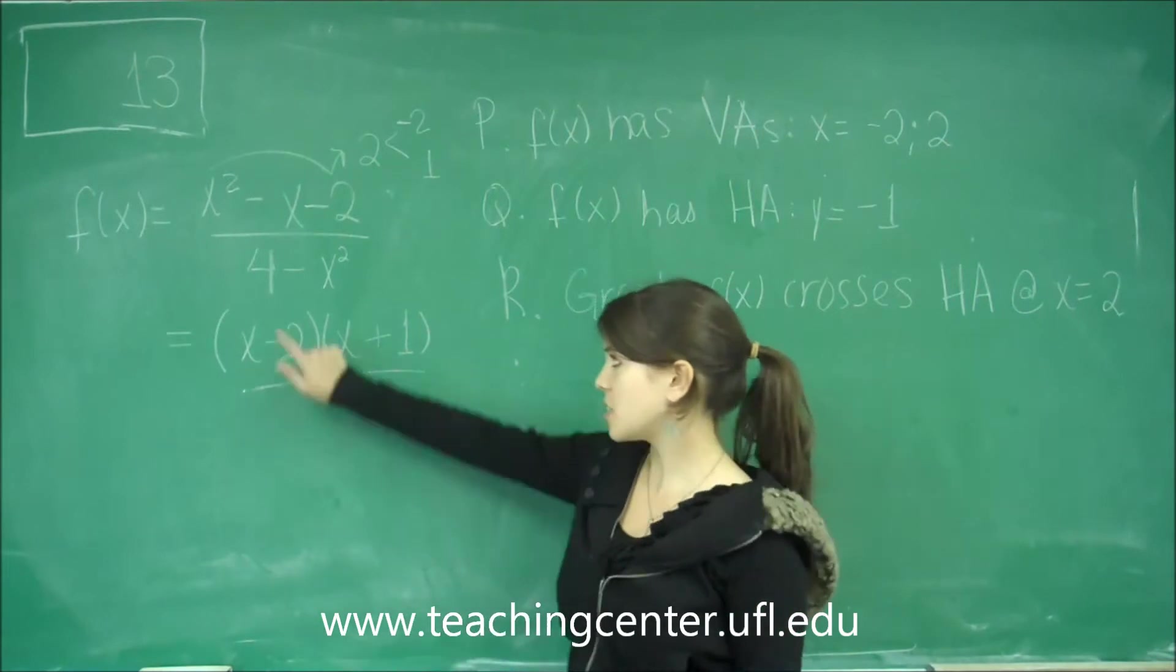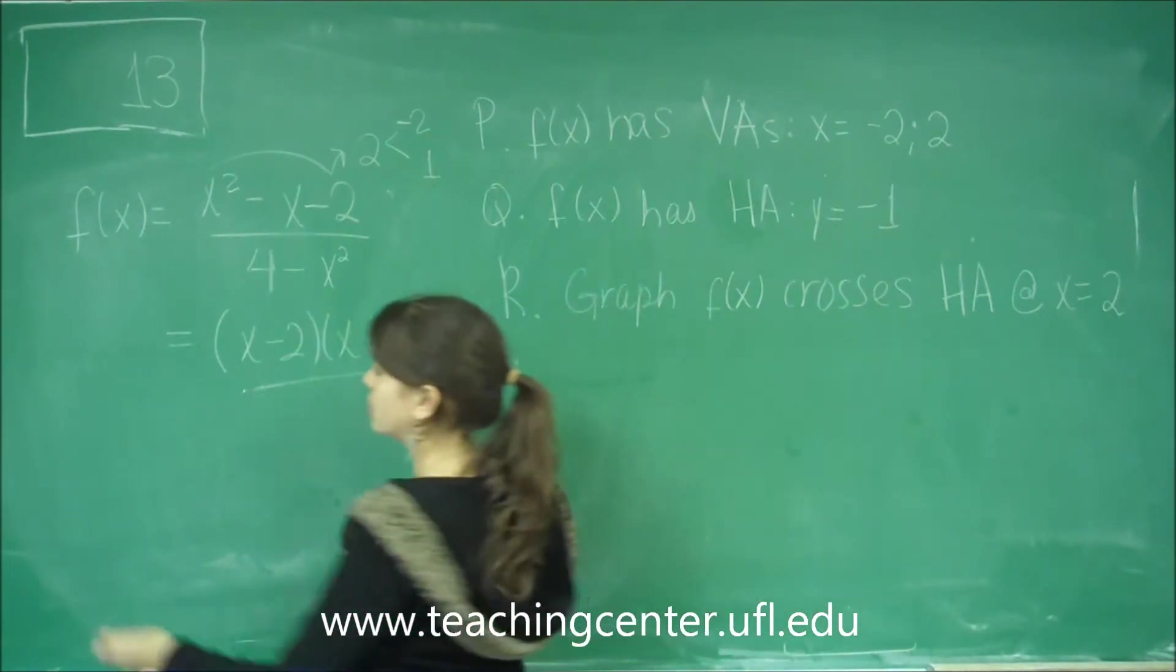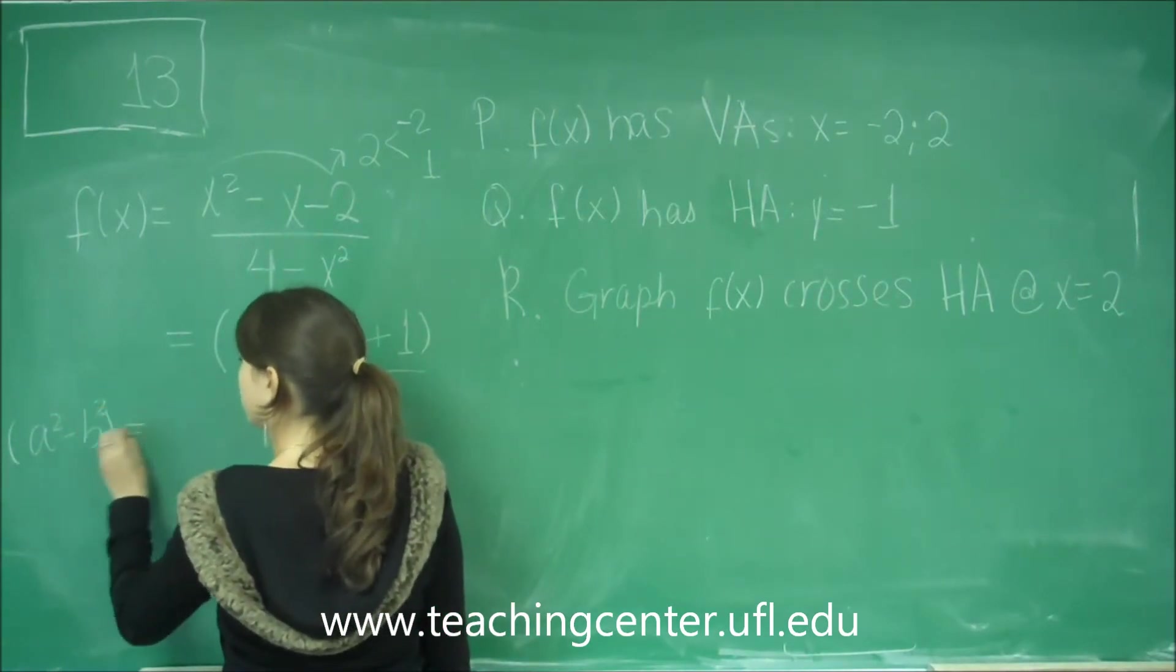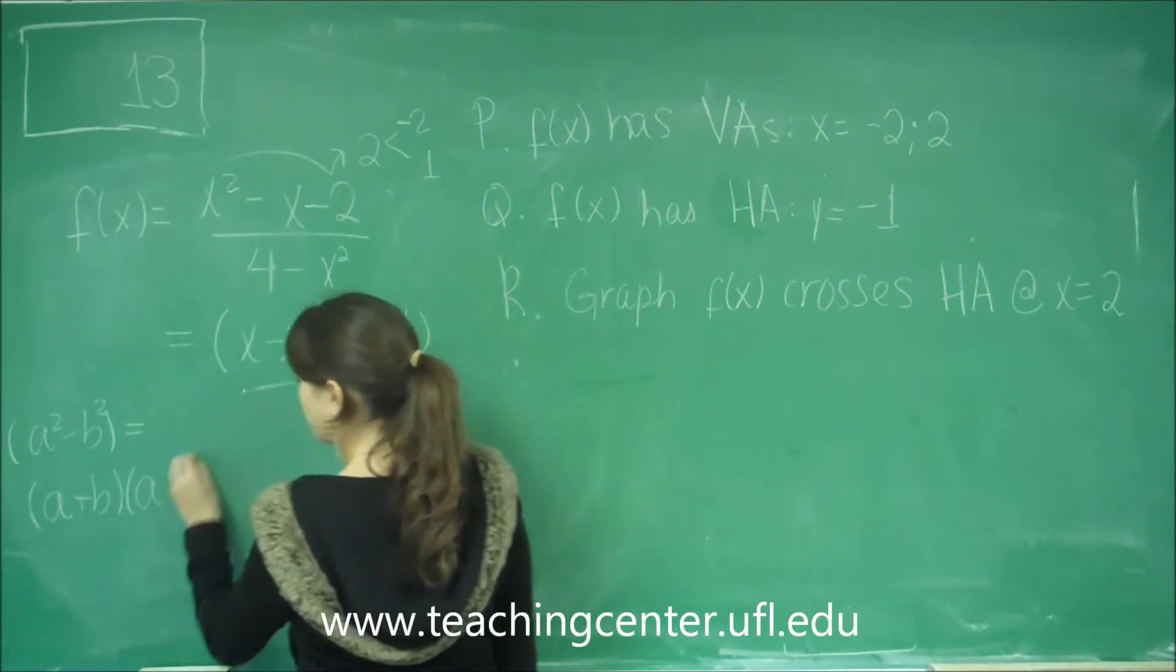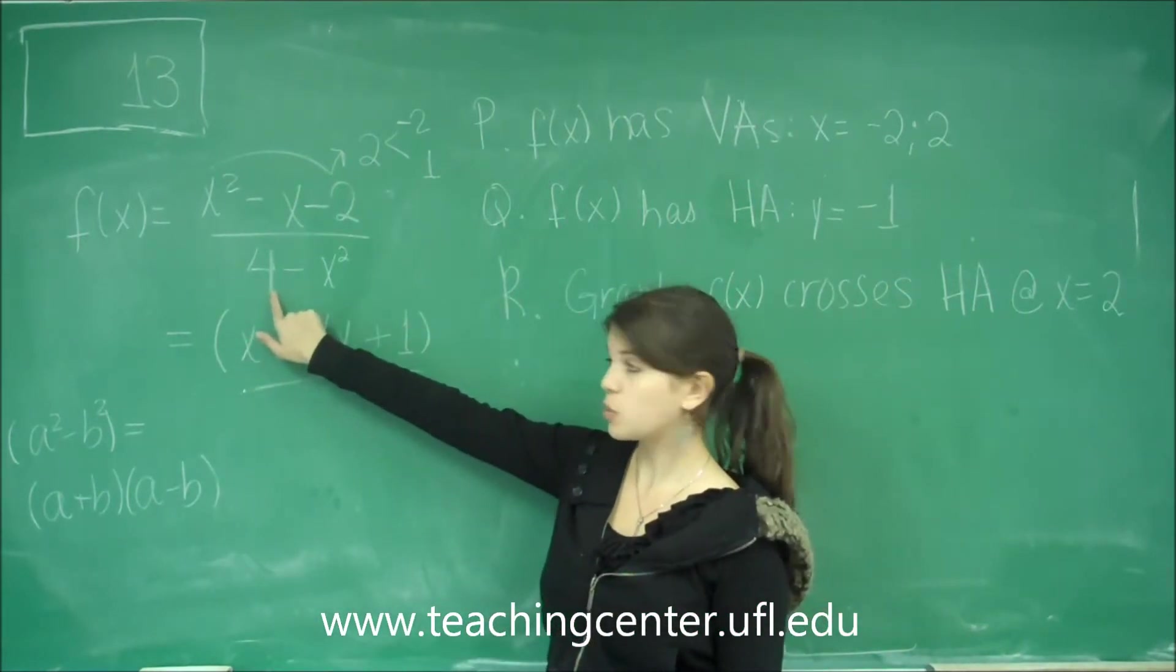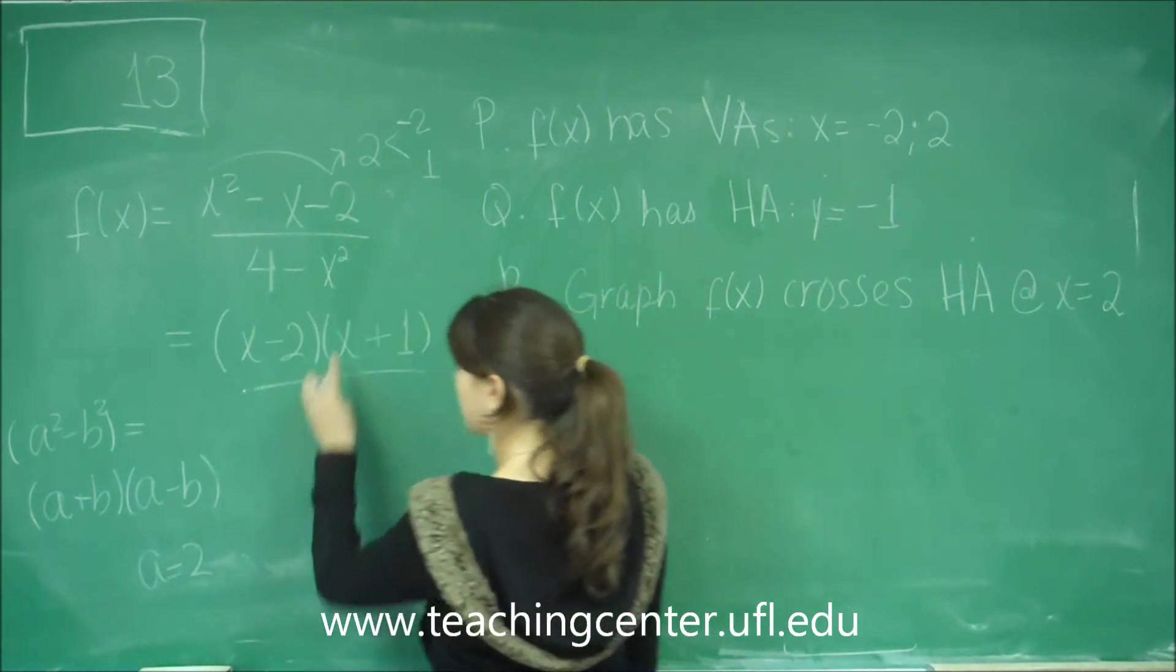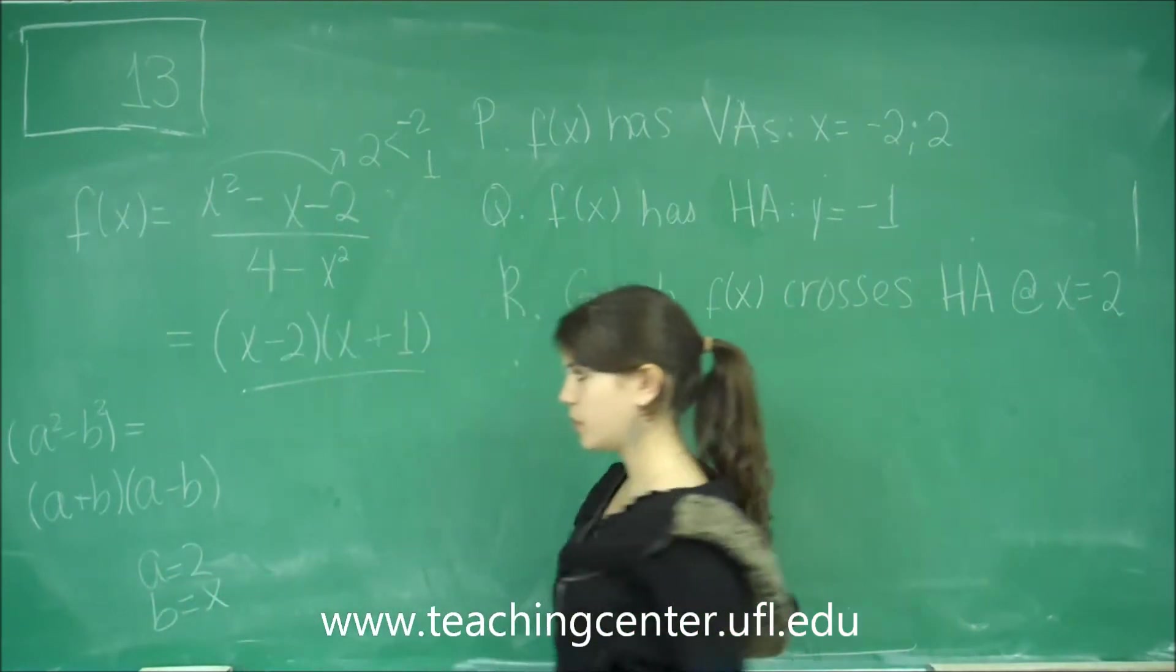And then the bottom is the difference of squares. So that's of the kind that goes like this: a squared minus b squared equals a plus b, a minus b. In this case, a is the square root of 4, so it's 2, and b is the square root of x squared, which is x.